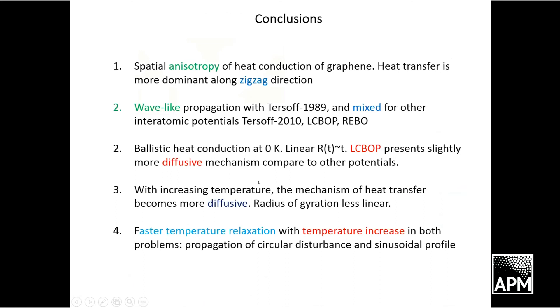I'll come to the conclusions. We show that heat conduction in graphene is anisotropic for low temperatures, but when the temperature increases, it looks more like diffusive. More dominant heat transfer is along the zigzag direction. Also, we show that with the increase of temperature, the relaxation of temperature goes much faster. Thank you for your attention.